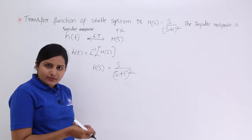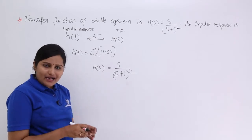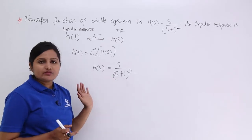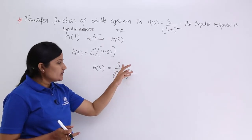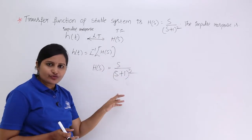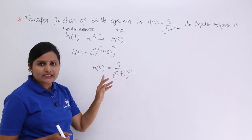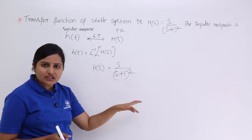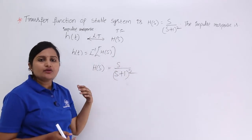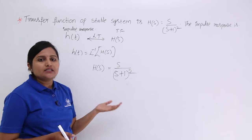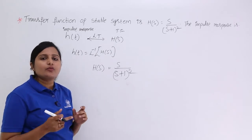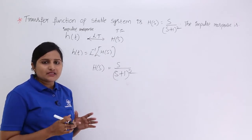If you want to convert in a simple way, your transform equation should be in the form of standard equations. For example: if it is in the form of 1/s², then you get t·u(t). If it is in the form of 1/(s+1), then you get e^(-t)·u(t). If it is in the form of 1/(s+1)², then you get t·e^(-t)·u(t). These are available in the tabular form of Laplace transform pairs.